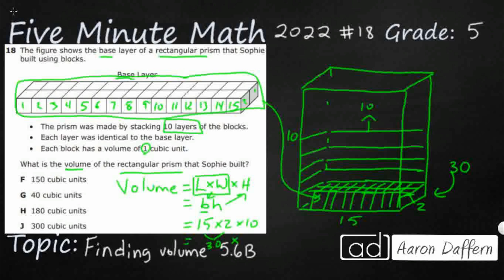So that's my base, 30. Multiply that by my height, 10 stacks or 10 layers, 30 times 10. And that's going to make 300 cubic units. So my answer is J.